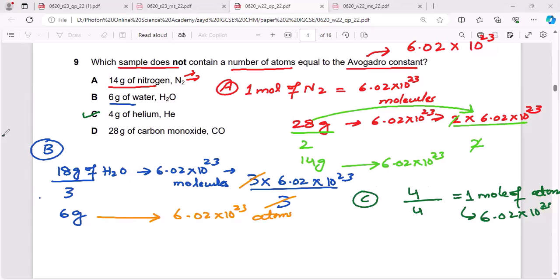Now the remaining option is D. That is the correct answer, but I have to solve it. 28 grams. Now molar mass of carbon monoxide is 12 plus 16, this is 28 as well. So 28 grams by 28 grams per mole, this is 1 mole. So 1 mole of CO means 6.02 times 10 raised to the power 23.